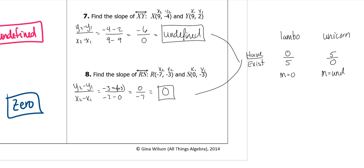So remember, it's always what you have over what exists. Do you have a Lamborghini or do you have a unicorn? And that'll tell you whether it's undefined or no slope. And that's the end of these notes.